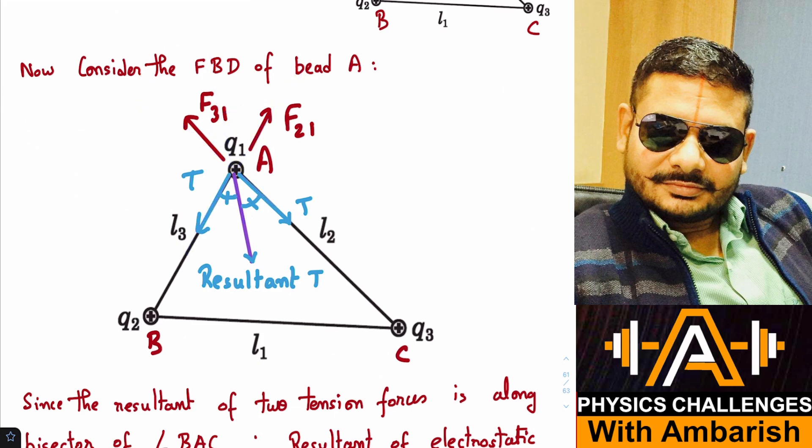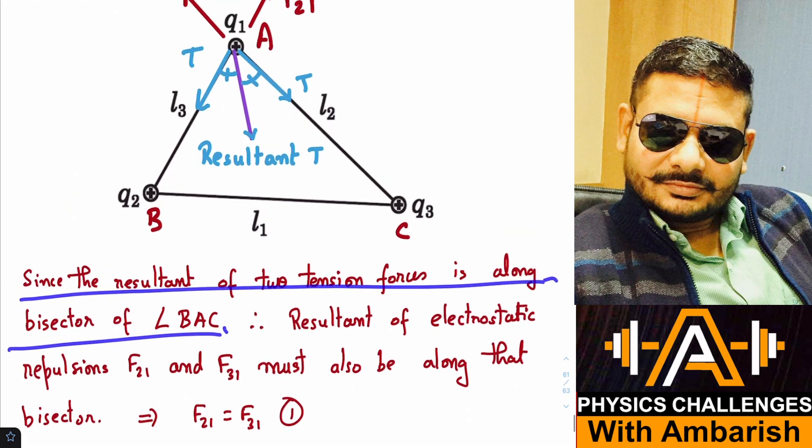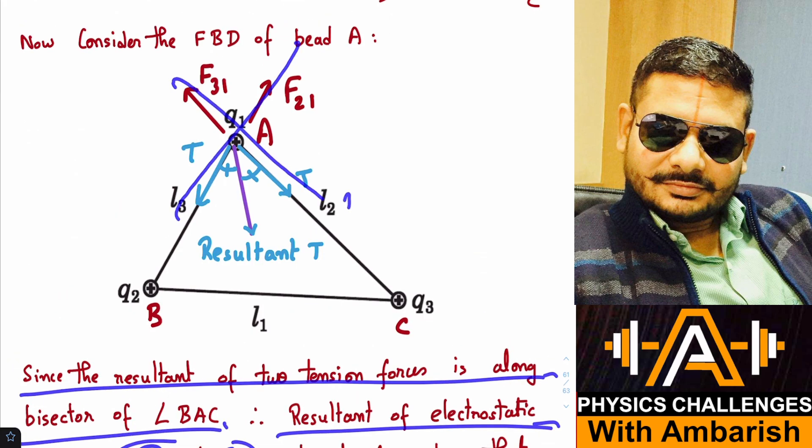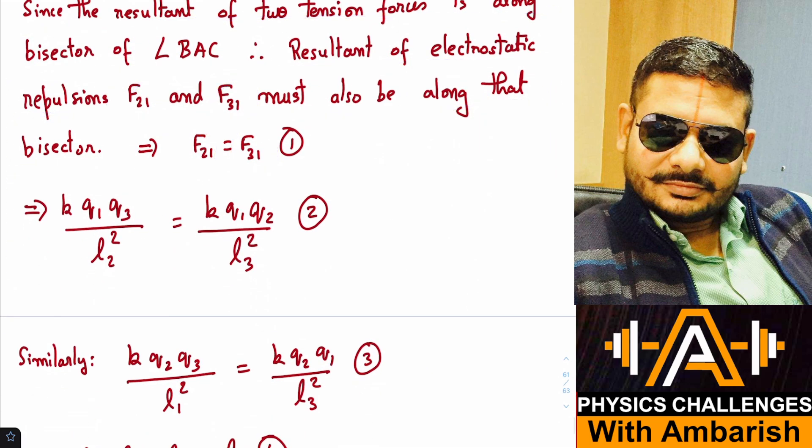So now I just need to write the correct equation and solve them. That's it. So that's what I've written. Since the resultant of the two tension forces along the bisector of BAC angle, resultant of electrostatic repulsions F21 and F31 must also be along that bisector. So F21 must be equal to F31. The resultant of two forces along the bisector, the two forces are equal. So now it's simple.